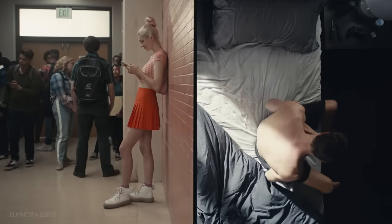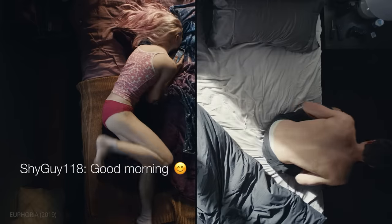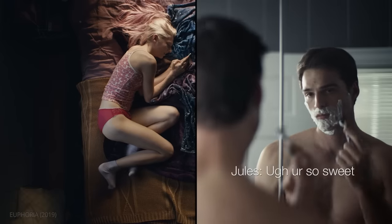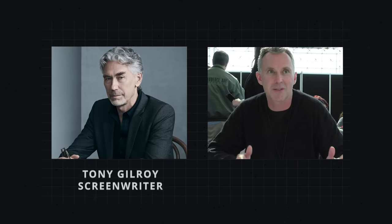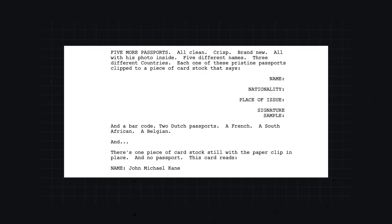For the most part, these approaches let the director decide how they want to represent the messages on screen. For The Bourne Identity, Tony Gilroy and William Blake Herron draw more attention to the text on a passport by aligning it to the right. This signals to the filmmaker that this text is important, so they should make sure the audience can read it.